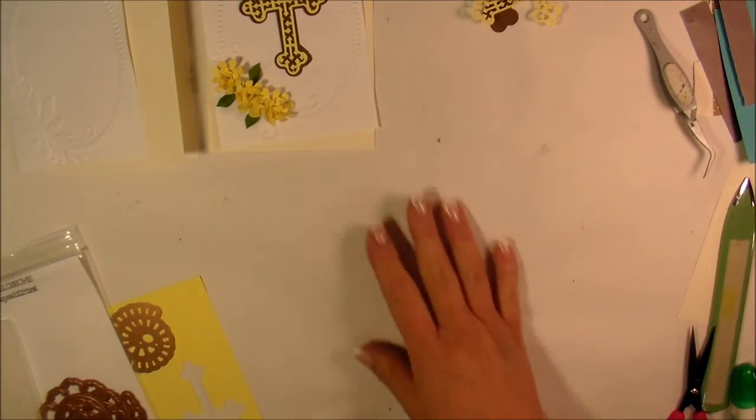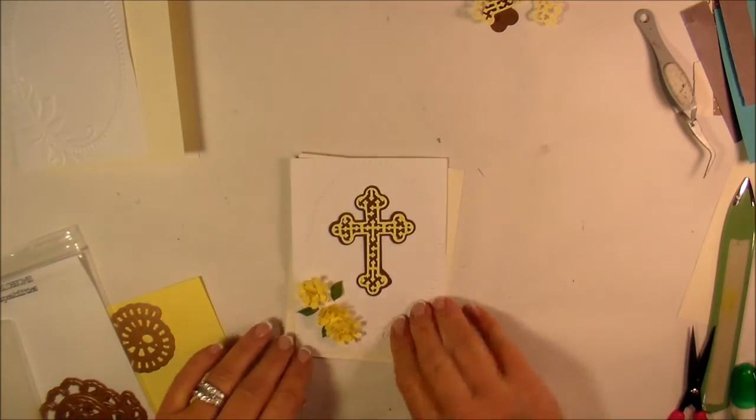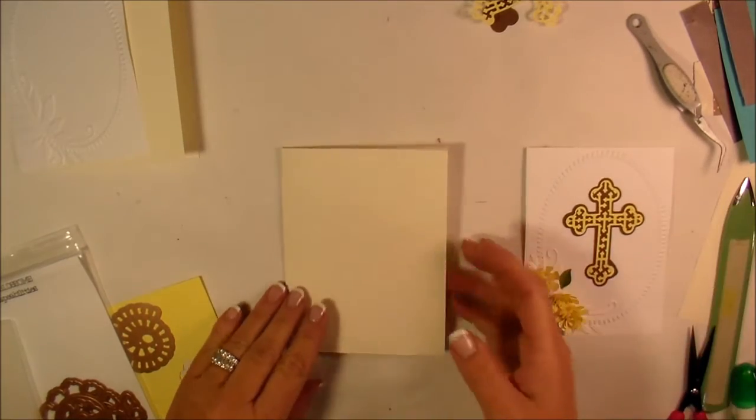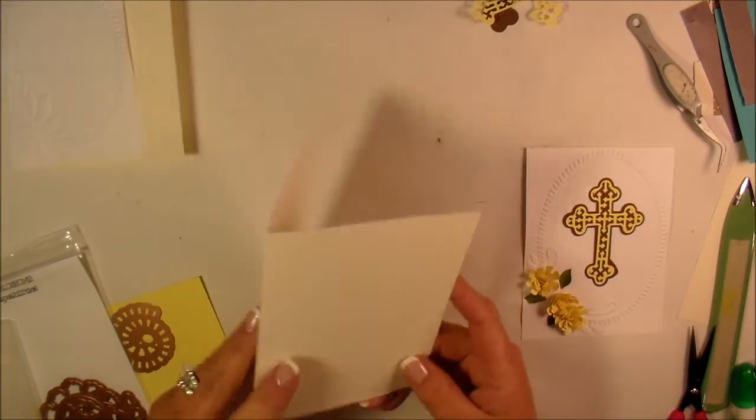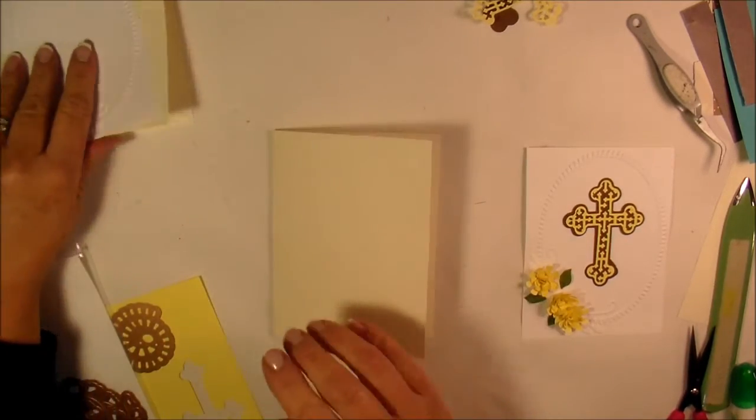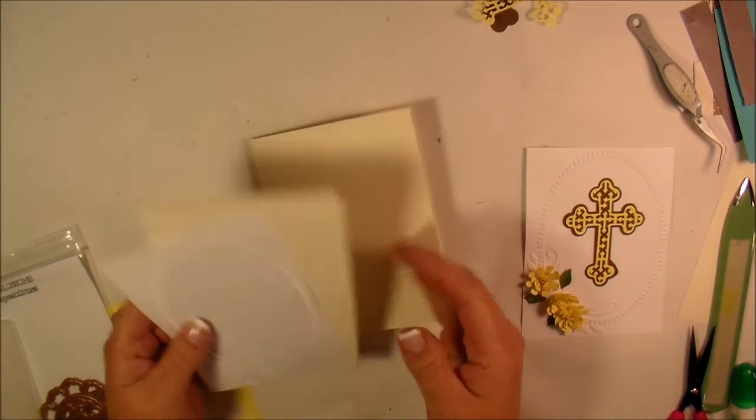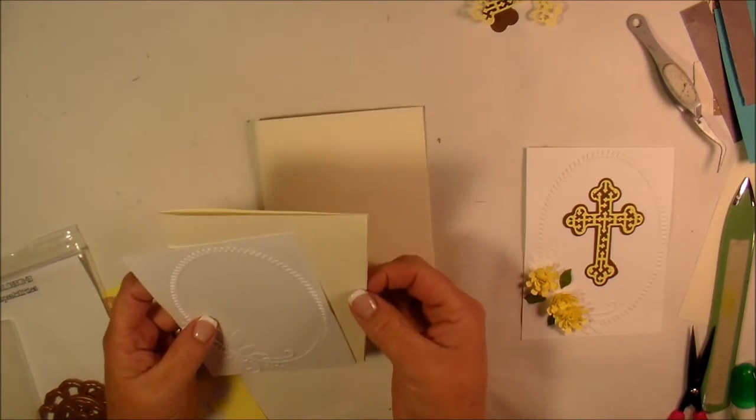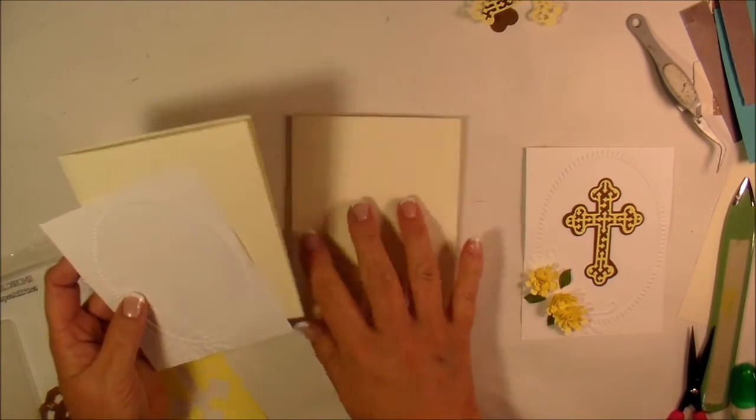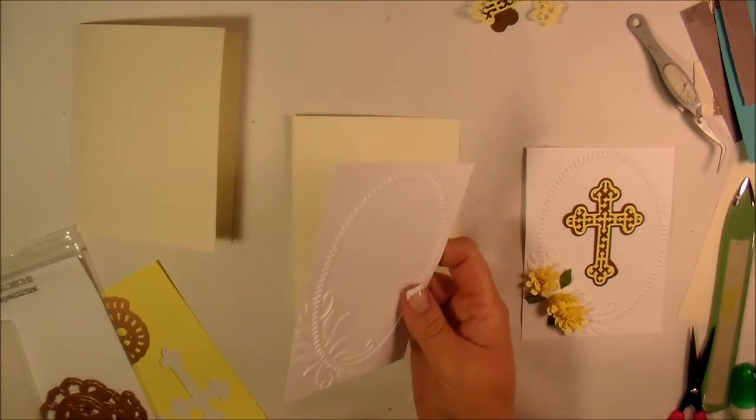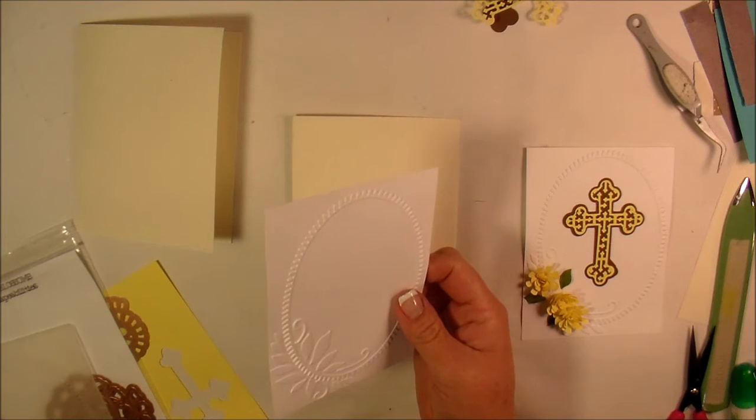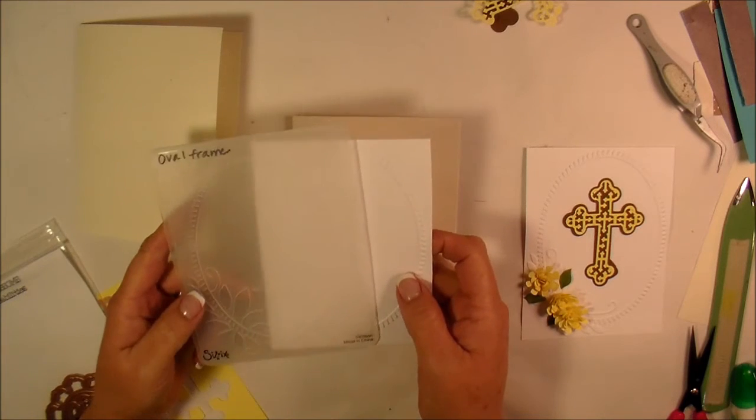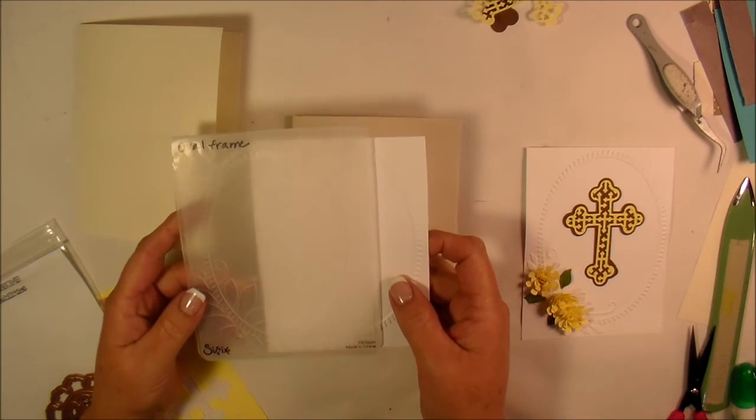Now this one is going to be a little bit more of a religious themed card. I went ahead and started out with a cream colored cardstock. I do have another one. I'm going to be making two of them here. This one here, I found some scraps in my scrap bin of that cream color. And this one is American Crafts. And then this is Recollections. And I took a five and a quarter by four inch white piece of cardstock. And I ran it through my oval frame from Sizzix.